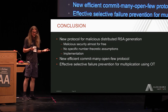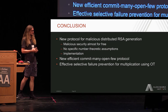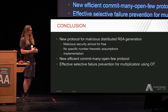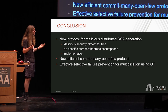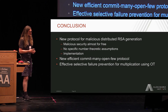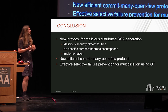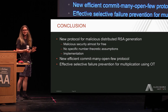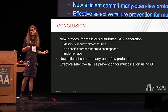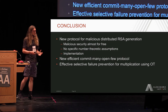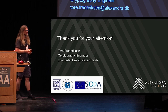In conclusion, we showed a new protocol for maliciously secure distributed RSA key generation in the two-party setting, where we get malicious security almost for free. It doesn't rely on specific number-theoretic assumptions since basically everything is shoved into oblivious transfers. We also showed a proof-of-concept implementation. Among other things, we used this AES-based construction for lightly extractable commitments where only some need to be opened, and we also showed a way of doing selective failure prevention when doing OT for multiplication of large numbers. Thank you for your attention.